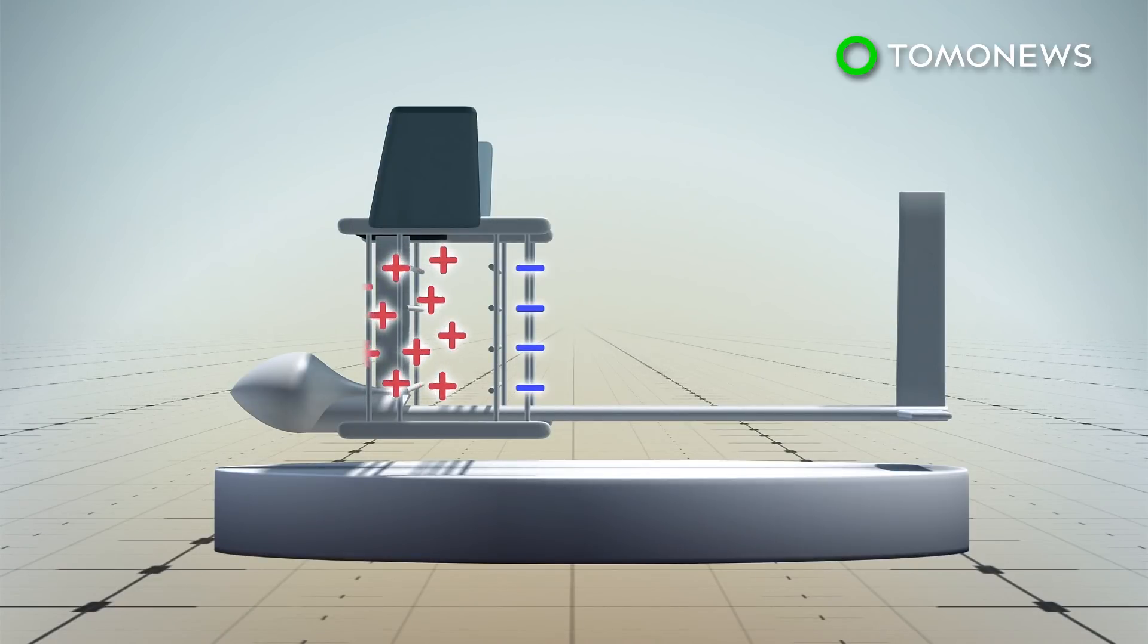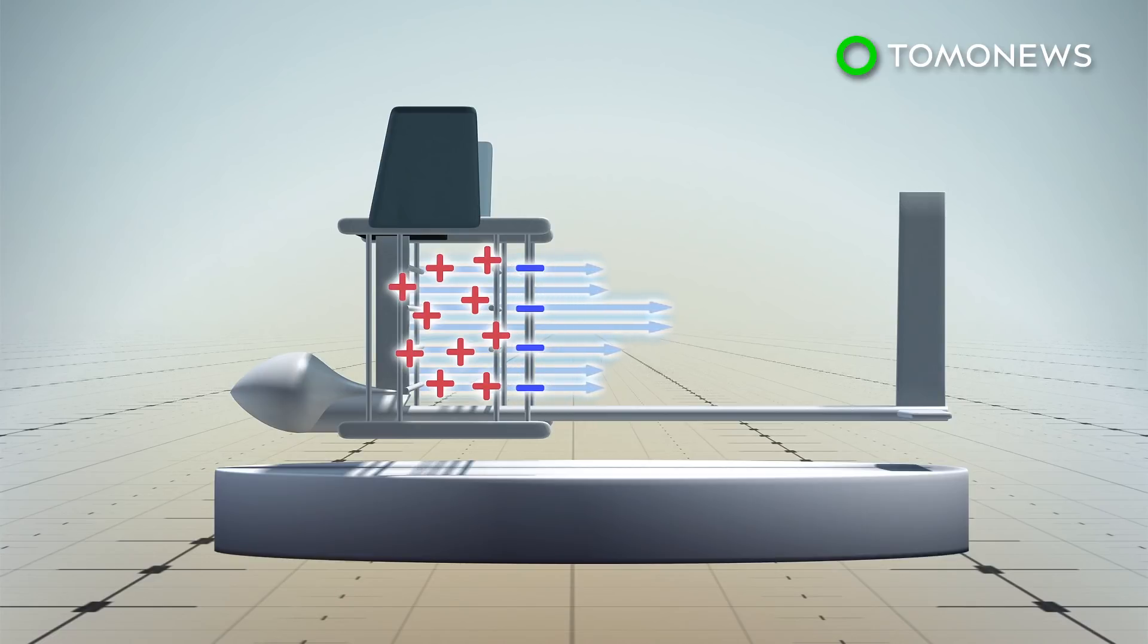As the ions move to the back row, they collide with neutral air pushing it behind the glider and generating thrust, driving the aircraft forward. This air is called ionic wind.